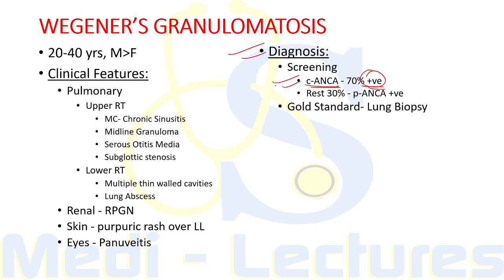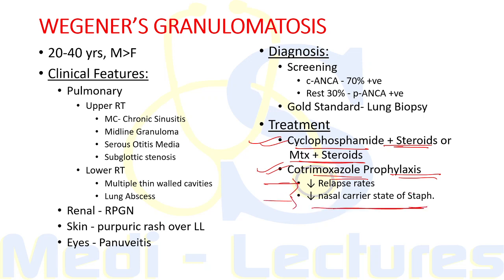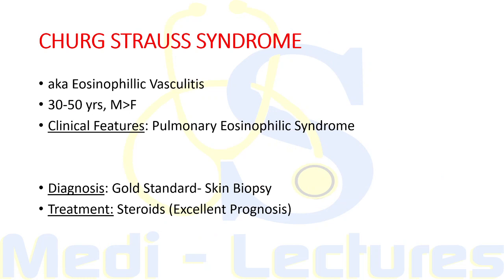The gold standard test for GPA is lung biopsy, showing typical granulomas in the lung tissue. Treatment involves cyclophosphamide plus steroids, or alternatively methotrexate plus steroids. Cotrimoxazole prophylaxis is also given to decrease relapse rates by reducing the nasal carrier state of Staphylococcus.